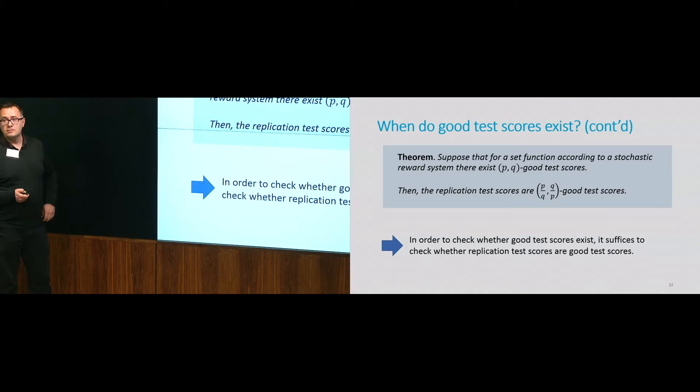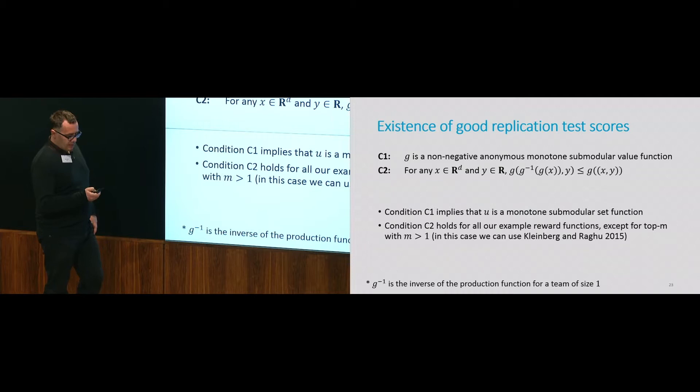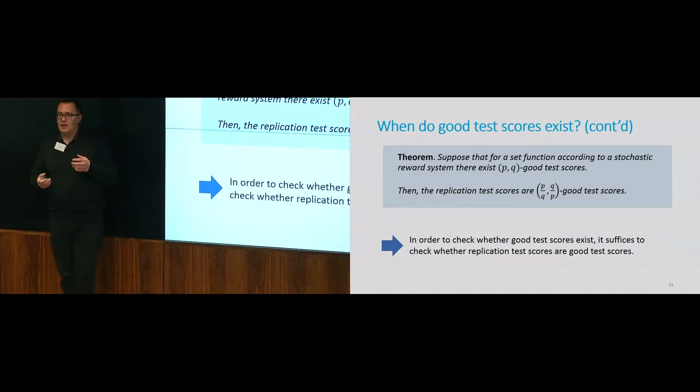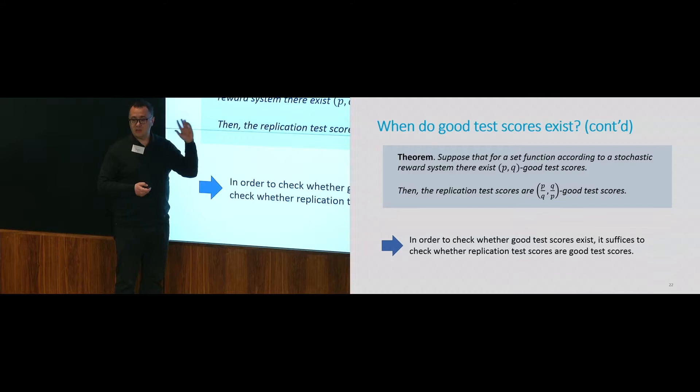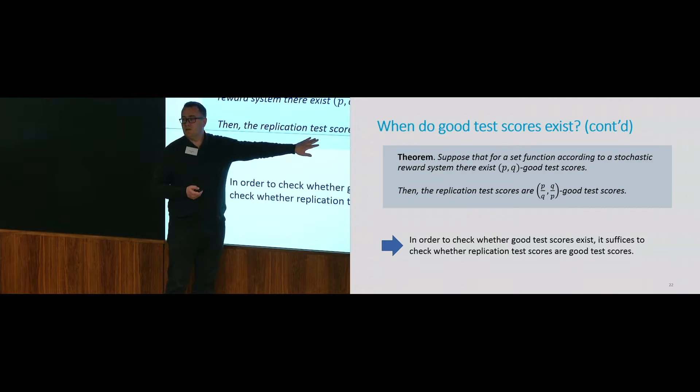Two highlights so far: first, simple test scores like mean or quantile may fail for some instances, and this failure is intuitive. Second, if you are after good test scores in the sense described, you can just focus on replication test scores and check whether they satisfy the PQ sketch condition. There remains the question of when replication test scores are provably good — can we give a general theorem based on the reward function class?